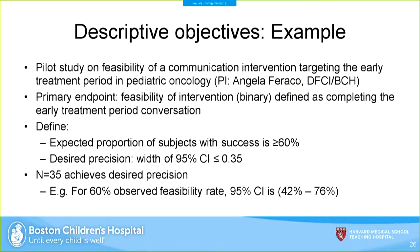Here's a concrete example from a study at Dana-Farber looking at the feasibility of a communication intervention targeting the early treatment period in pediatric oncology. The primary endpoint was feasibility, defined as whether the patient's family completed a conversation with the primary care team during the early treatment period. We expected a success rate of 60% or more and wanted a confidence interval width no greater than 35%. The calculation showed a sample size of 35 individuals would achieve this desired precision — for a 60% observed feasibility, the confidence interval is 42% to 76%.